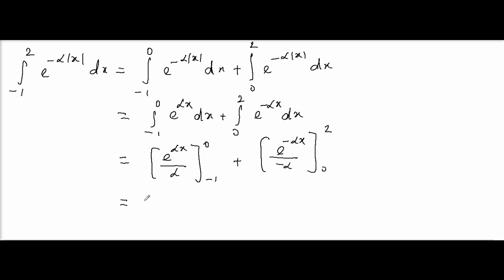First, let me apply the upper limit for the first term: it will be 1 (e^0) minus lower limit, it is e^(-α), right? Plus, upper limit substitute, we already have a minus sign here. So, upper limit substitute, we have already a minus sign, so it is minus e^(-2α).